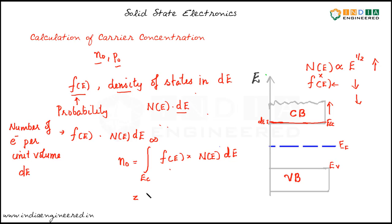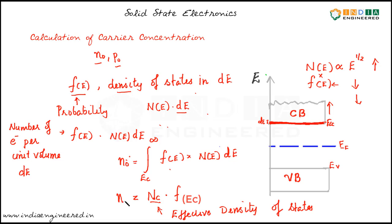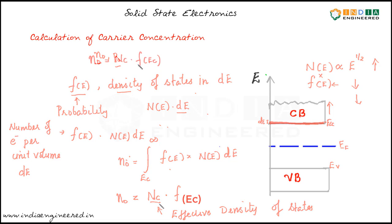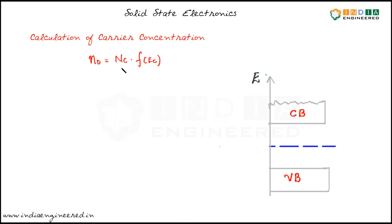Using that property, we can say this integral is equal to Nc·F(E). We represent all the distributed electron states by an effective density of states Nc at the conduction band edge. So N0 = Nc·F(EC) — the equilibrium electron concentration equals the effective density of states multiplied by the probability of finding an electron at the conduction band edge EC.